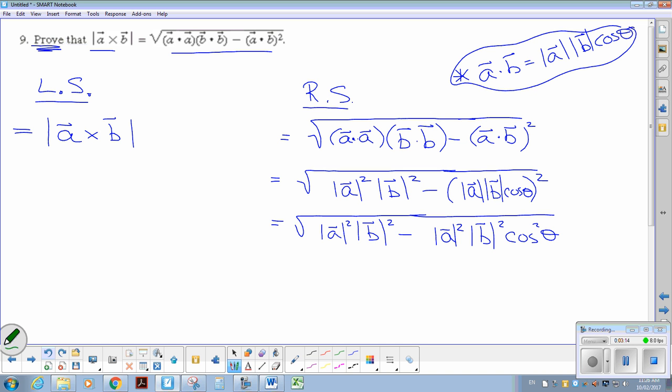And now I have like terms. I like where this is going. So I'm going to common factor out magnitude of A squared, magnitude of B squared. And I'm left with 1 minus cos squared theta.